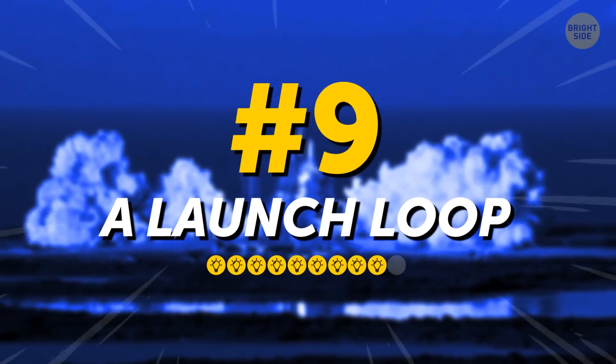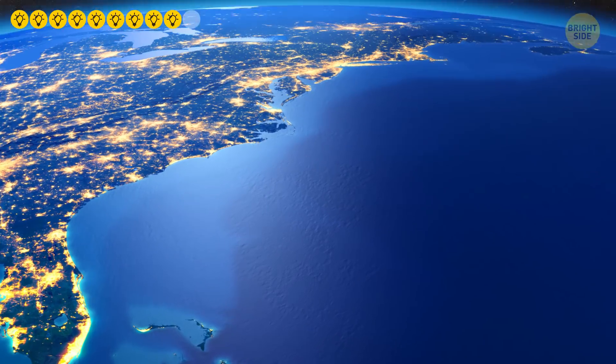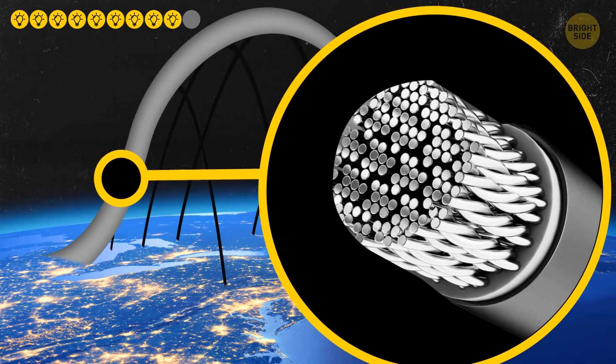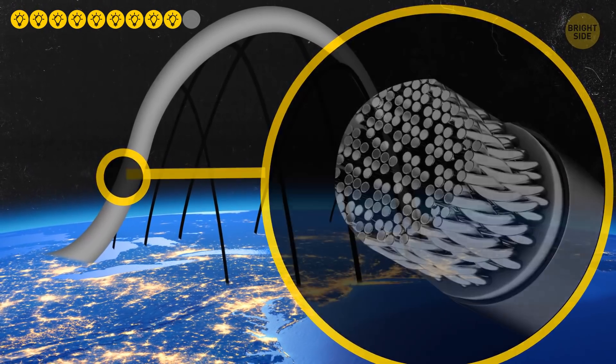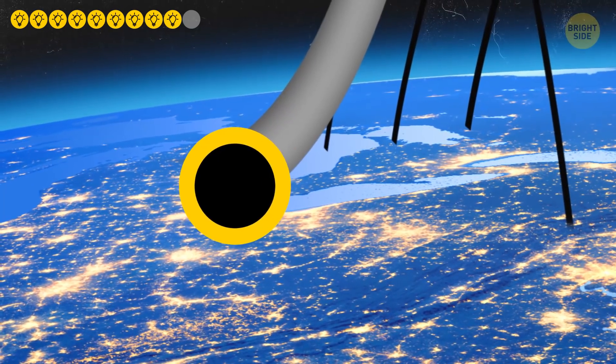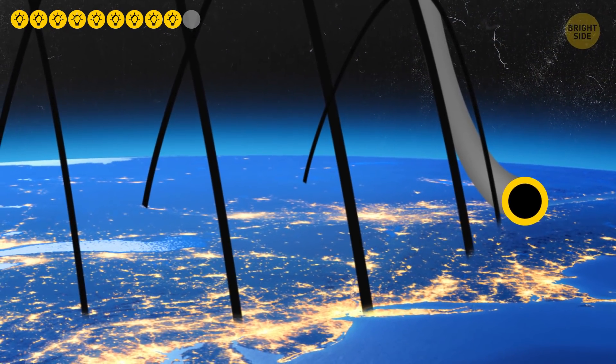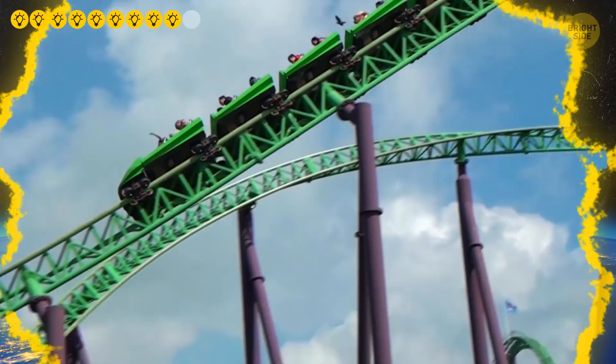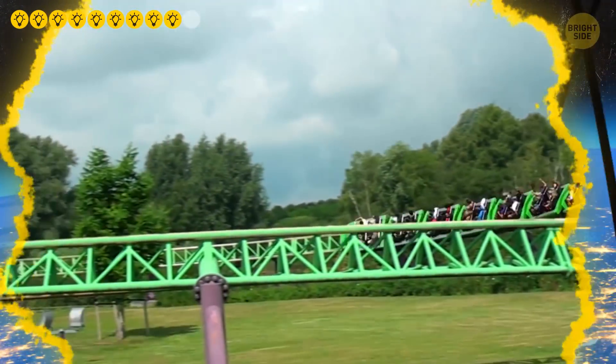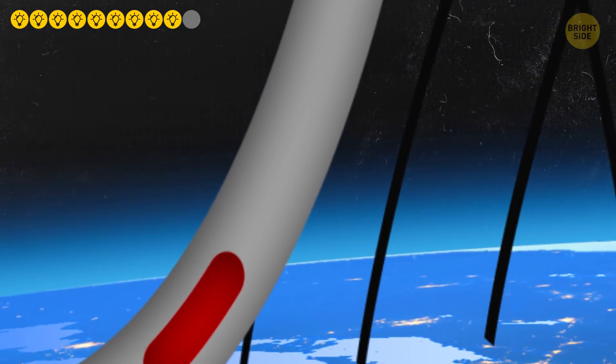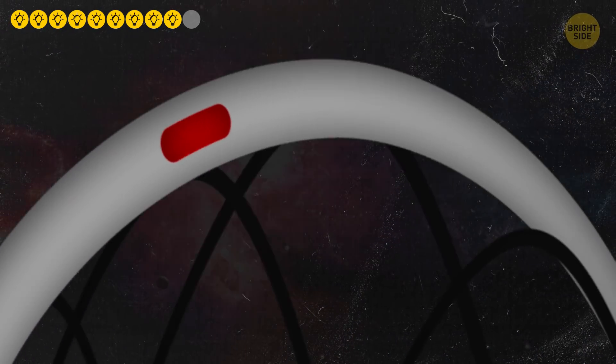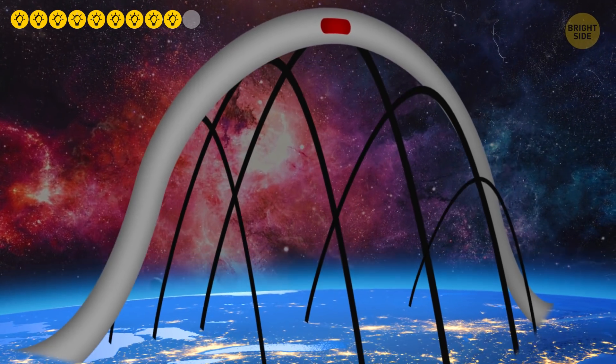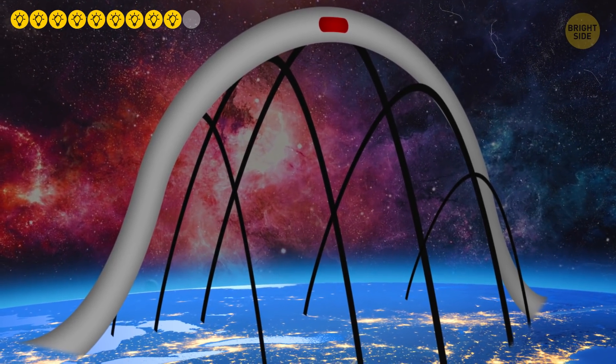A Launch Loop. This ginormous construction would be built of magnetic cables covered with special protective material. Both ends of the launch loop would be firmly fixed on the ground, and the center of the track would rise high up into the sky, just like a section of a giant roller coaster. A space train would set off from one side of the loop, and by the time it reached the middle of the track, it would already be in space. Unfortunately, the construction would cost a fortune to build.